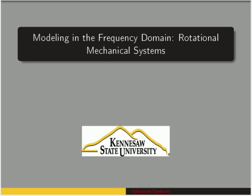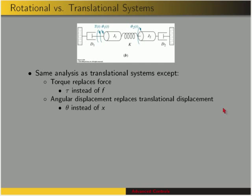We need to continue looking at modeling mechanical systems. Now we're going to move on to rotational mechanical systems. Here's an example of one. Instead of translating, these objects are rotating around this axis shown. So this could be like a DC motor, a drill, anything that's rotating. And we're going to model that in the frequency domain.